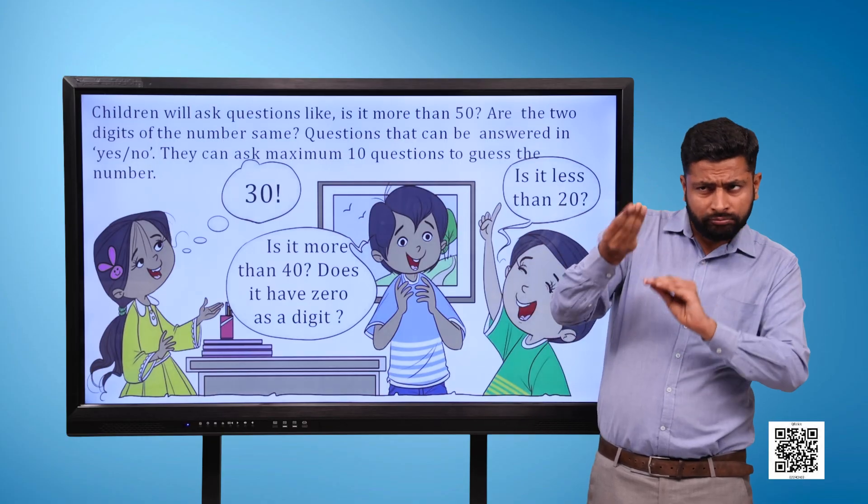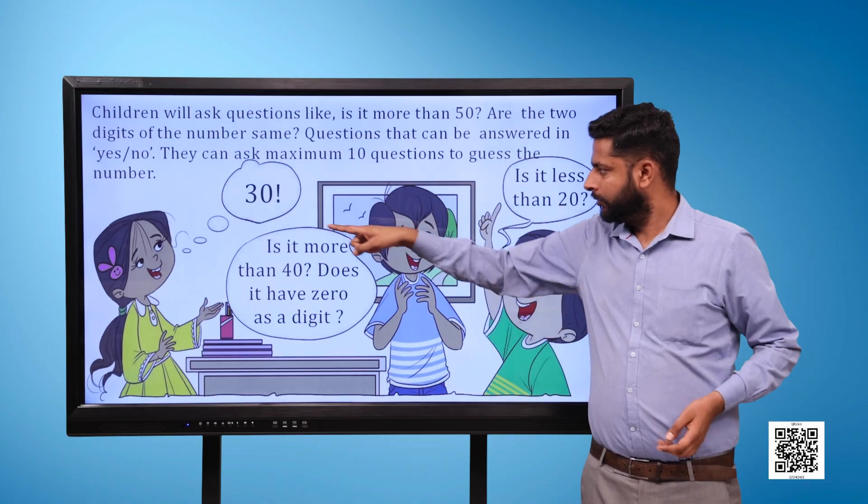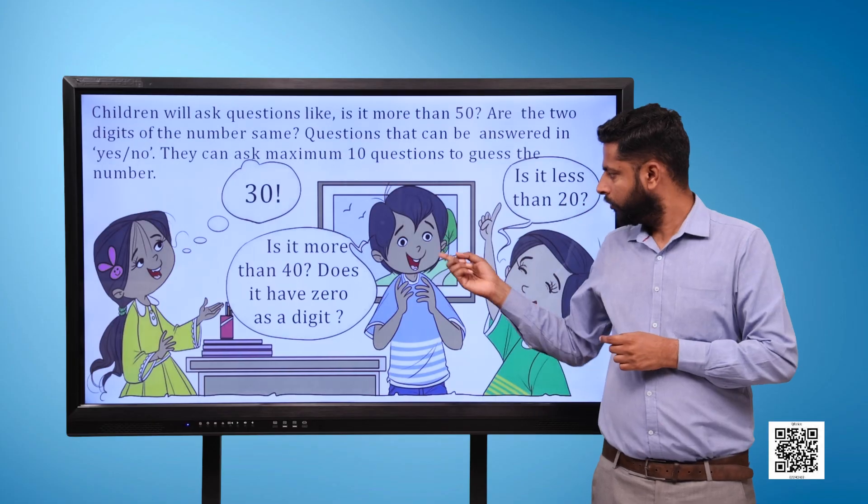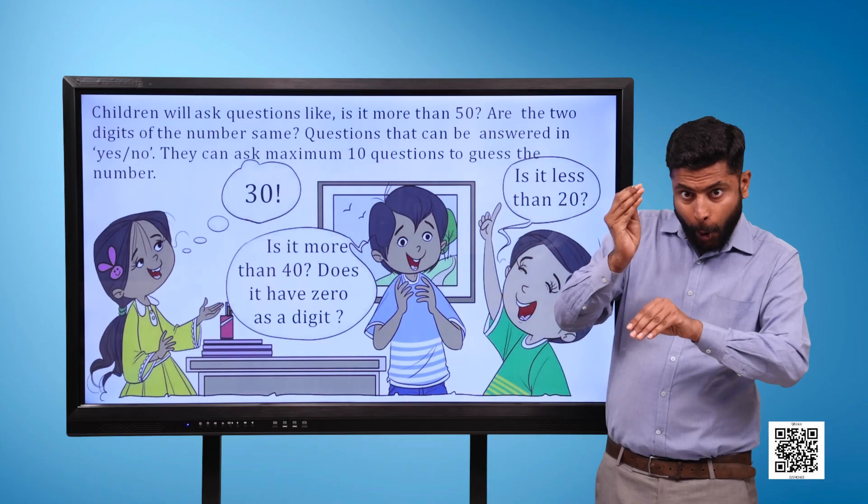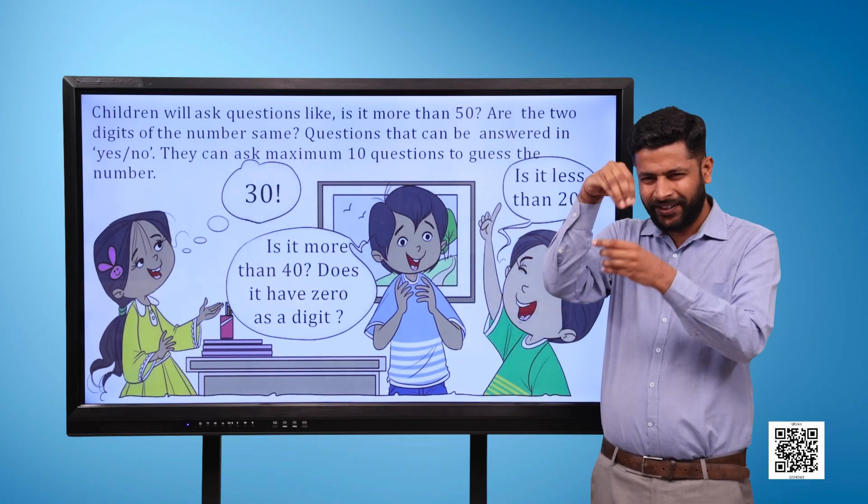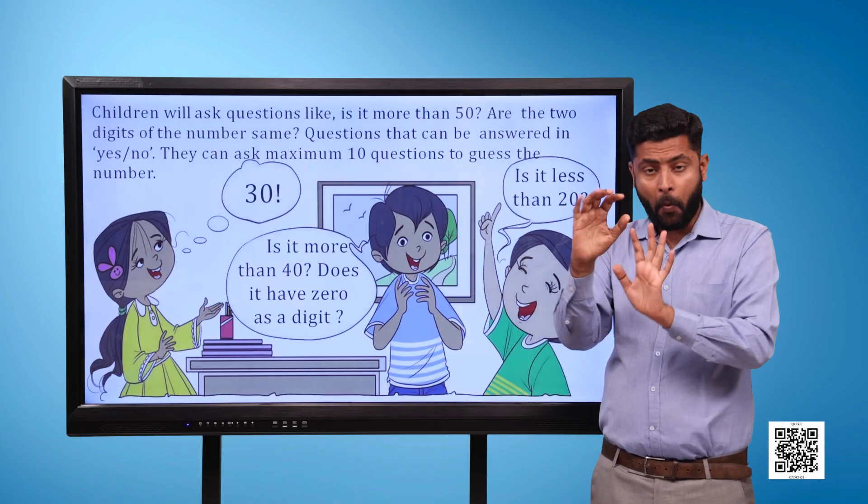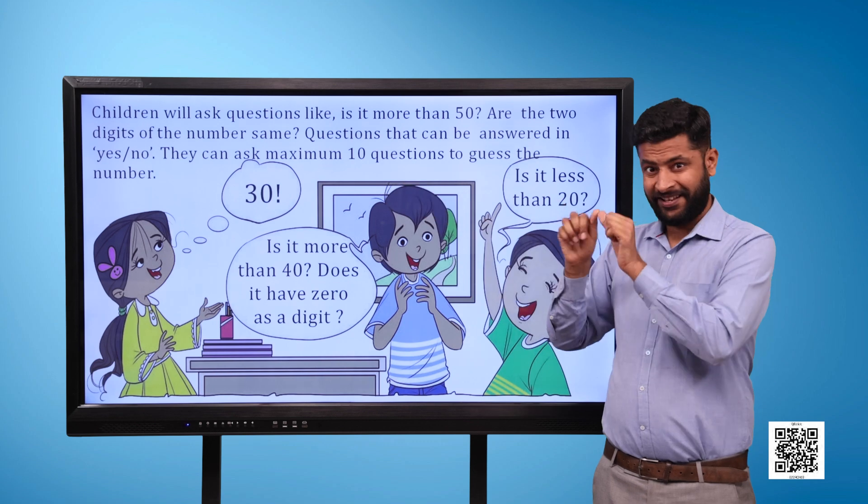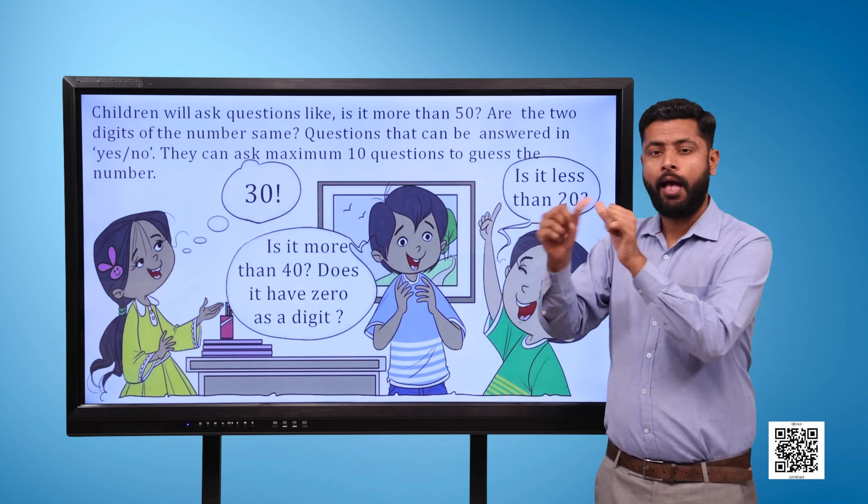We have an image here. The girl is thinking about number 30. The boy in the center asks 'Is it more than 40?' and 'Does it have 0 as a digit?' The boy on the right side says 'Is it less than 20?'